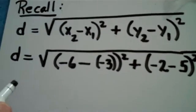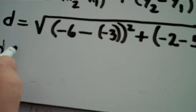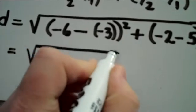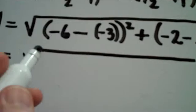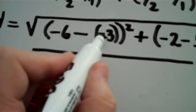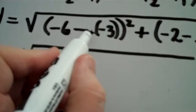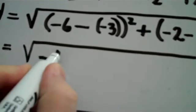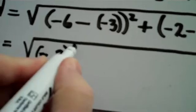And now all we have to do is work correctly with the arithmetic. Okay, inside here, look what happens. The minus minus opposite of a negative becomes a plus, so that leaves me with a negative 3 quantity squared.